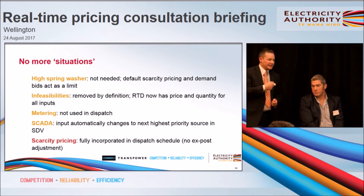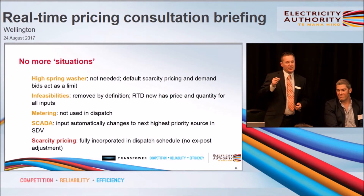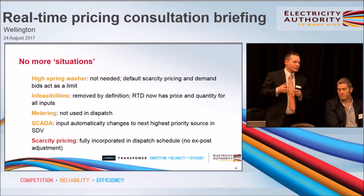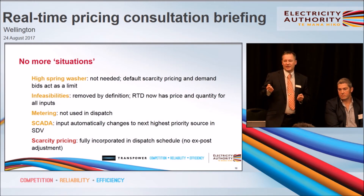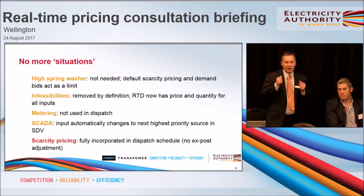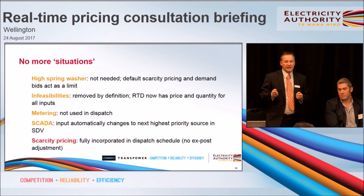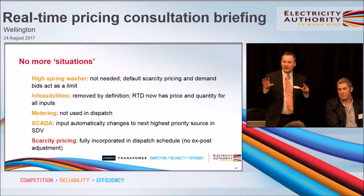An additional point was raised: the high spring washer rules were introduced to reflect conceptually the level of metering error or inaccuracy that could give rise to a high spring washer that wasn't genuine. Also, the quality of inputs into the RTD calculation are higher in real time than in the predictive RTP prices, so the risk of getting a high spring washer due to inaccurate inputs should be much lower.